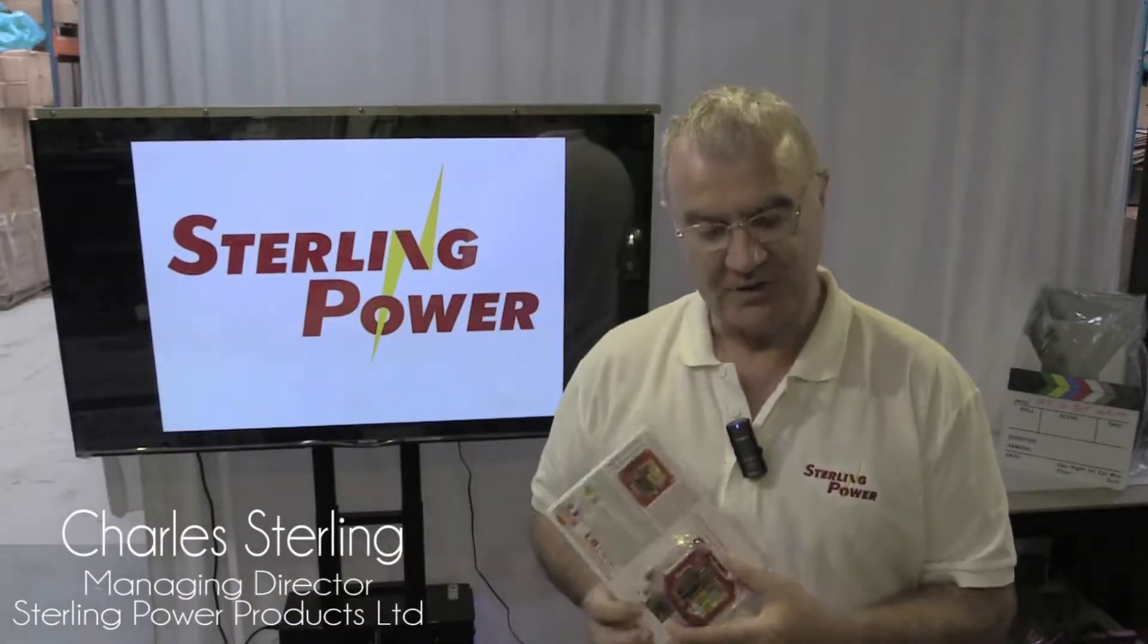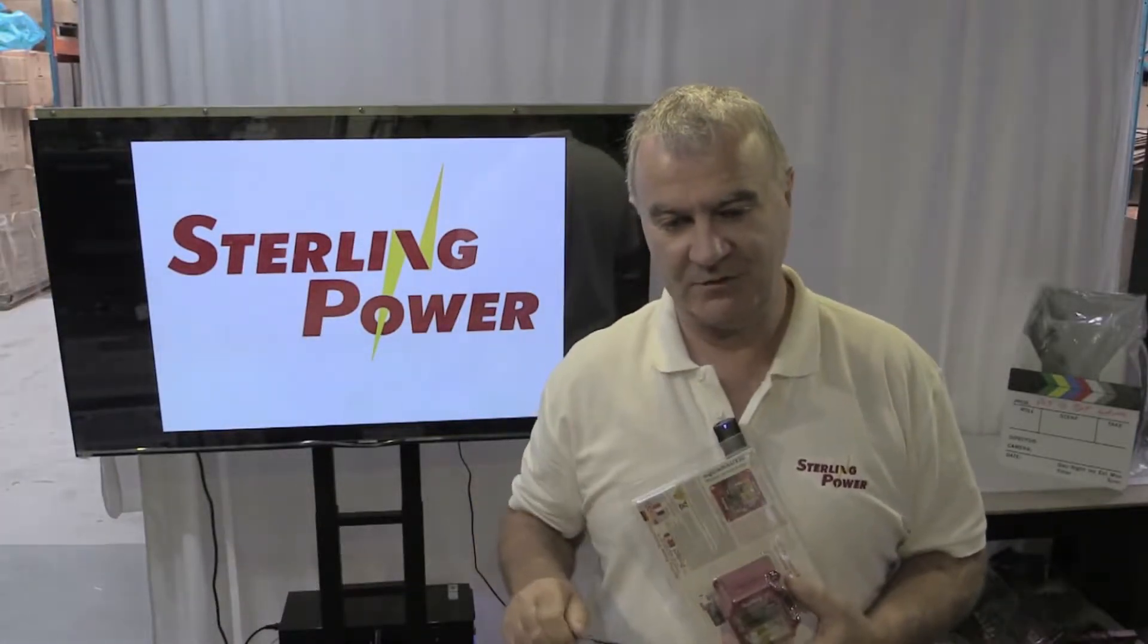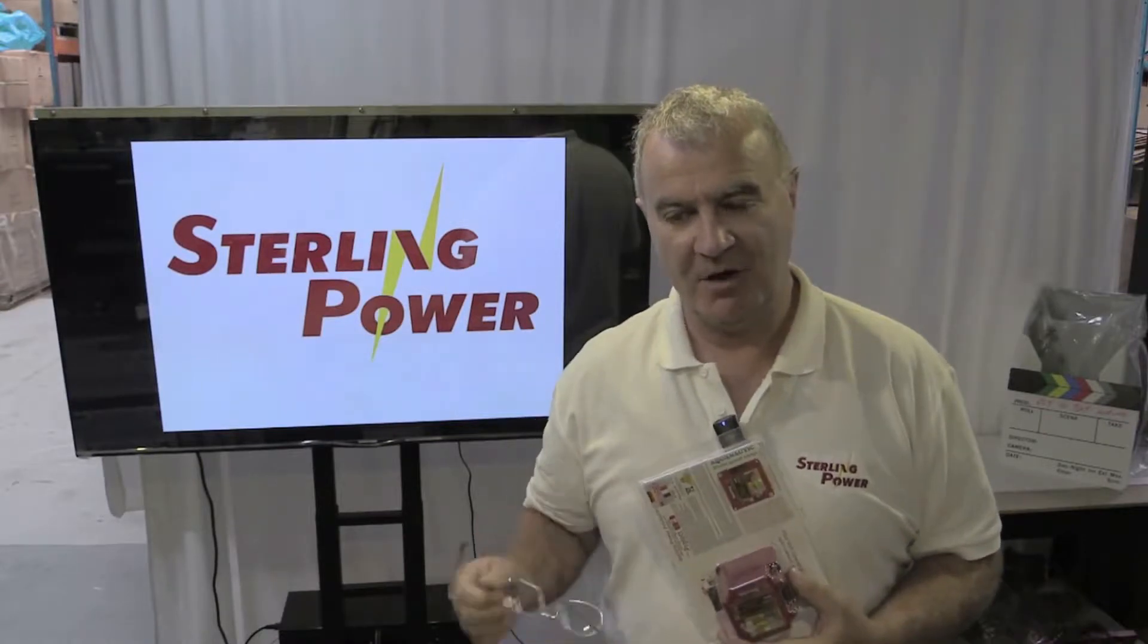Okay, today we're going to look at the alternator protection device. This is something you put onto your alternator to protect it in case somebody switches the power off, the electrics off on one of those one-two-both electrical switches, or the actual cable drops off your alternator.